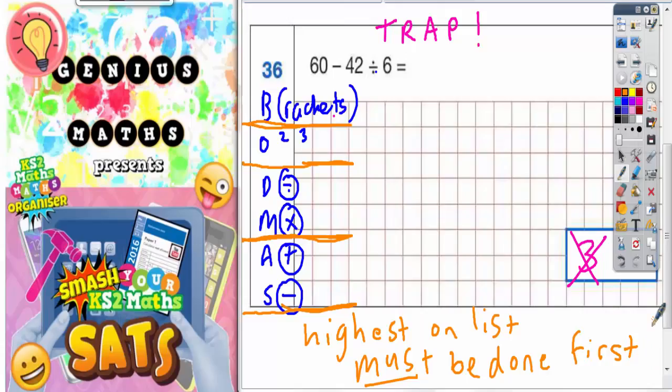So as you can see, earlier on when I fell into the trap, I did the subtract first to get 18. And then 18 divided by 6 is 3. But subtract is not higher than the divide on the list. Divide is higher. So the divide has got to be done first.